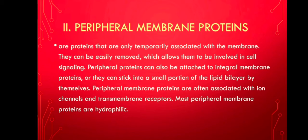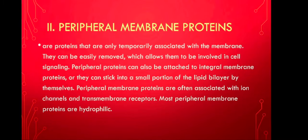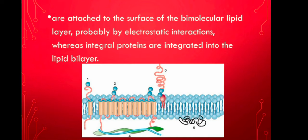The second group is peripheral membrane proteins. These are proteins that are only temporarily associated with the membrane — they are not permanently there and can be easily removed, which allows them to be involved in cell signaling. Peripheral proteins can also be attached to integral membrane proteins, or they can stick into a small portion of the lipid bilayer. Peripheral membrane proteins are often associated with ion channels and transmembrane receptors. Most peripheral membrane proteins are hydrophilic, attached to the surface of the bimolecular lipid layer by electrostatic interactions, whereas integral proteins are integrated into the lipid bilayer.